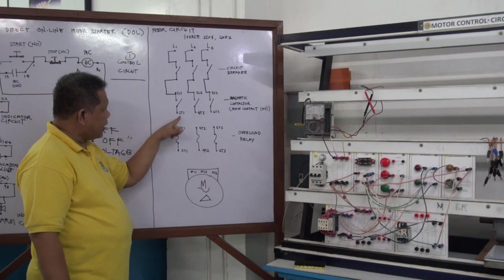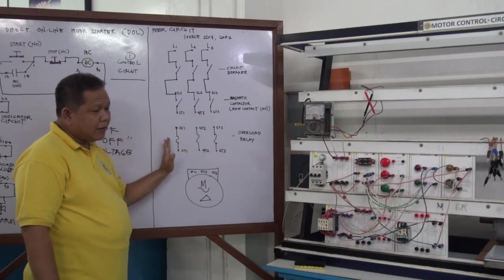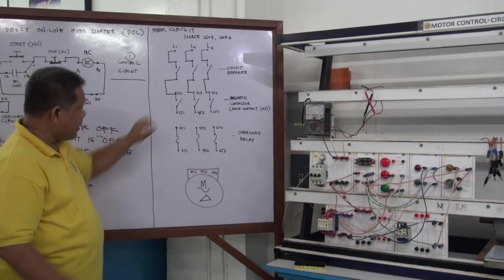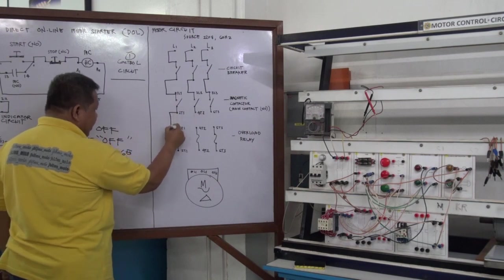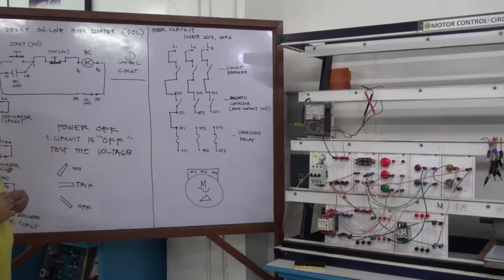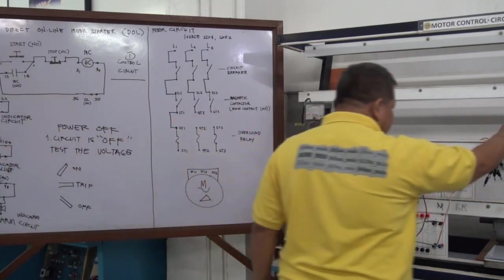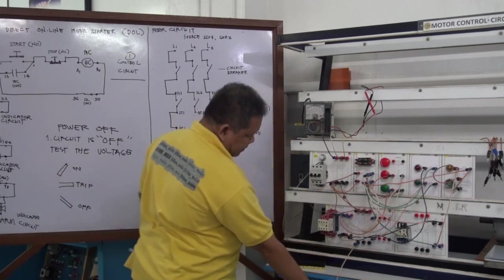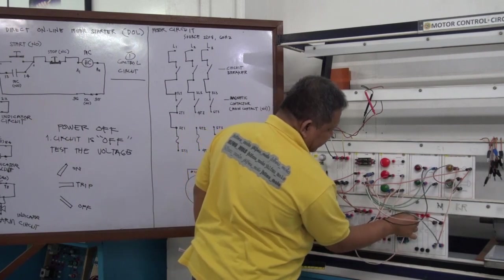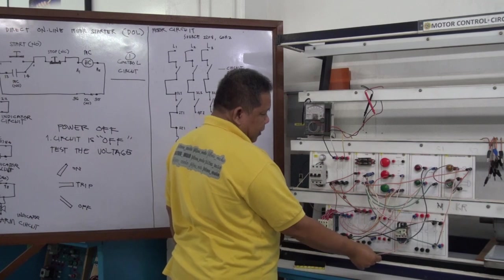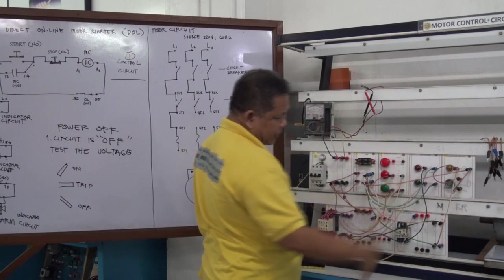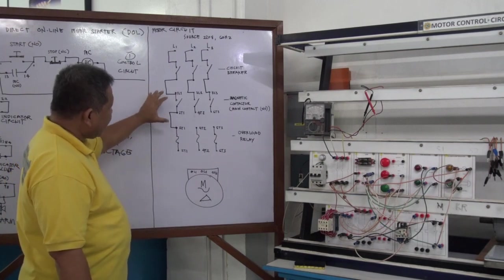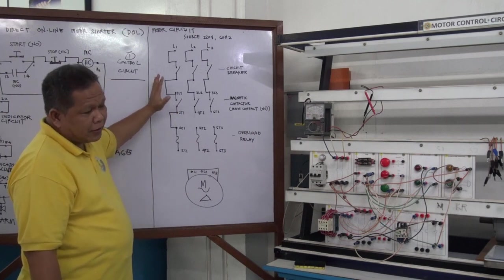On the other side of the main contacts of the magnetic contactor, this will be connected to the overload relay. You will notice they have the same terminal markings. So 2T1 of the magnetic contactor will be connected to 2T1 of the overload relay. This is the 2T1 terminal of the magnetic contactor and this is 2T1 of the overload relay. The magnetic contactor gate is connected on the upper portion.